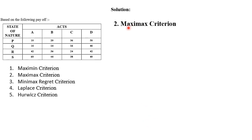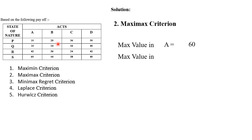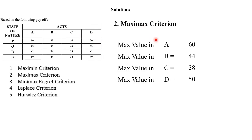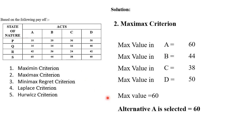The next thing we need to find is the maximax criterion. Again we split into two parts: maximum and maximum. First we find the maximum value in each action, then from those we find the maximum. The maximum value in A is 60, in B is 44, in C is 38, and in D is 50. Among these, the maximum value is 60, which appears in action A. Therefore alternative A is selected, with a value of 60. This is our maximax criterion.